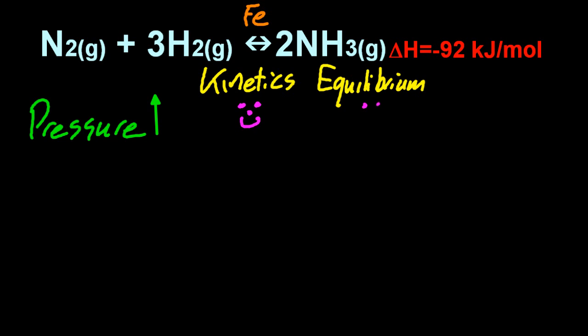But if you increase the pressure on the equilibrium, it's going to shift to the side with the least gas particles. Oh, that's good too. Four reactants, two products. So pressure increase, that's all great for the Haber process.